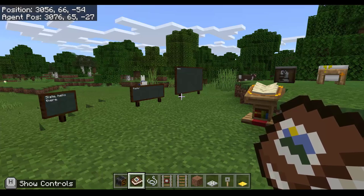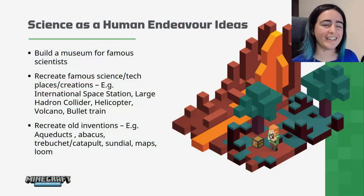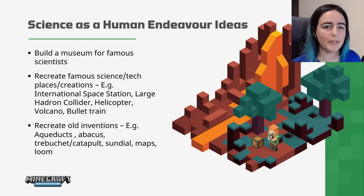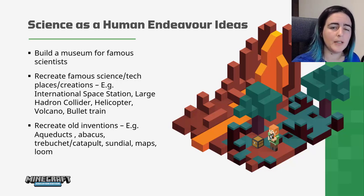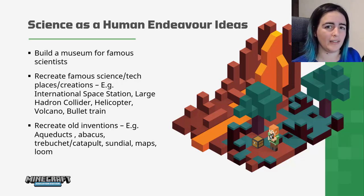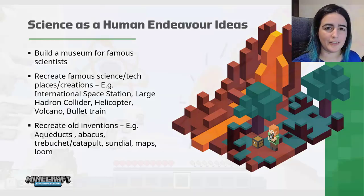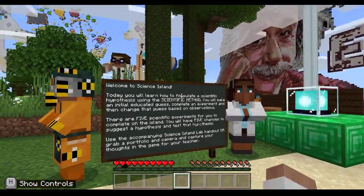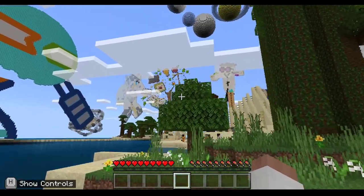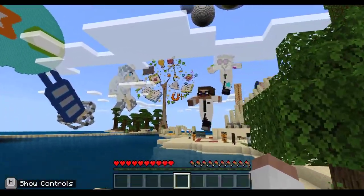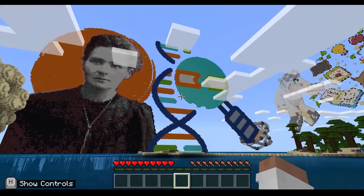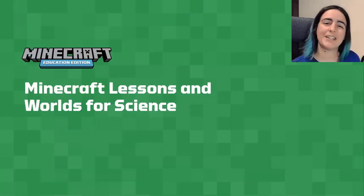Our third strand, science as a human endeavour, looks at the history of science and inventions — the culture and people who created them and how they have impacted our lives. We can use Minecraft as part of a larger research project, using it to apply knowledge gained by recreating old inventions such as aqueducts, or building a monument or museum to a famous scientist or group of scientists.